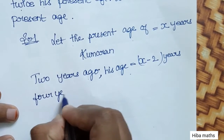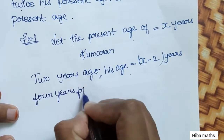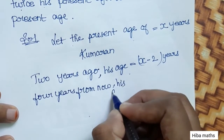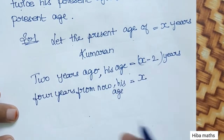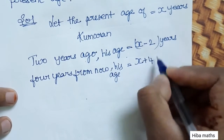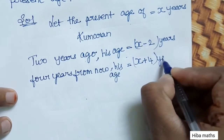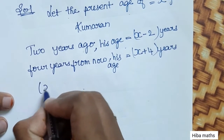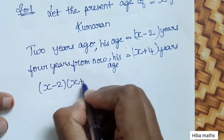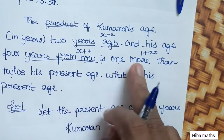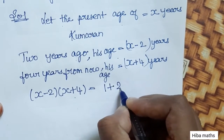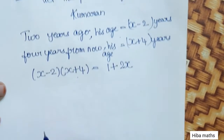4 years from now, his age will be x plus 4. The product of x minus 2 and x plus 4 is 1 more than twice his present age, that is 1 plus 2x.